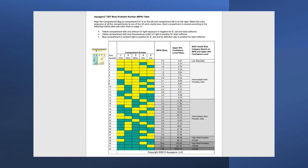To determine the MPN value of the sample, match the color sequence of the five compartments to one of the 32 color-coded rows in the Aquagenx MPN table.